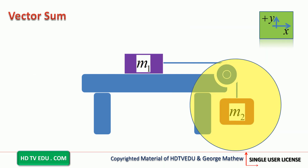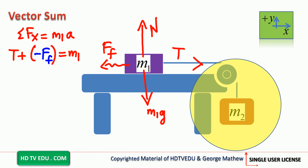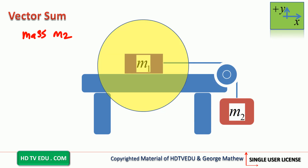Now the vector sum for mass m1: normal force acts vertically up, gravitational force acts vertically down, tension acts to the right, and force of friction acts to the left. Along the horizontal, net force equals m1a: T is to the right, force of friction is to the left, and acceleration is to the right, giving T minus Ff equals m1a.